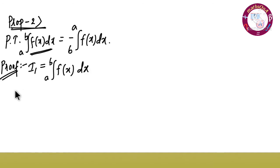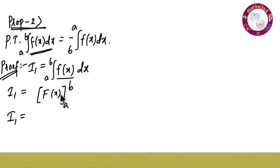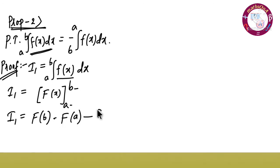Now integrate: small f of x becomes capital F of x, with limits a to b. Applying the limits, upper limit minus lower limit — so F of b minus F of a. This is equation number one.